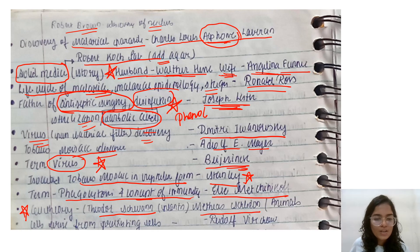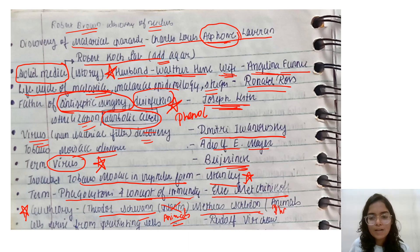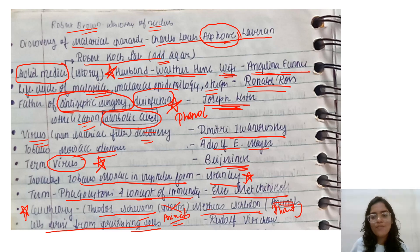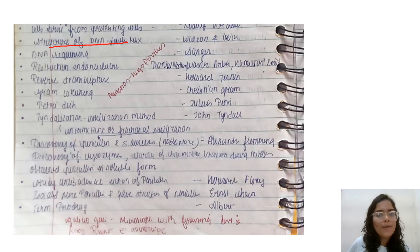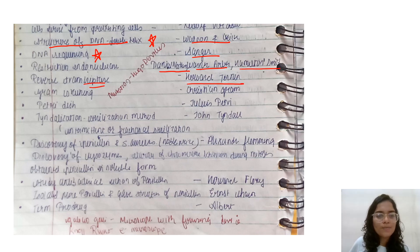Cell theory — that all cells are the basic unit of life — was given by two scientists: Theodor Schwann and Matthias Schleiden. Schwann contributed the animal cell component as he was a zoologist, and Schleiden contributed the plant cell component as he was a botanist. The principle that cells arise from pre-existing cells followed from this. The structure of DNA was given by Watson and Crick, DNA sequencing by Sanger, restriction enzymes by Daniel Nathans and Hamilton Smith, and reverse transcriptase was also discovered in this era.